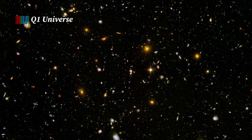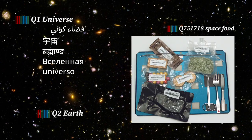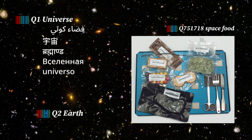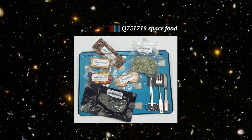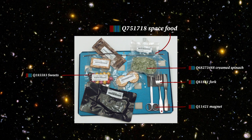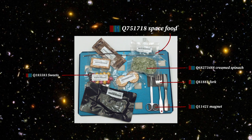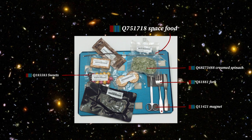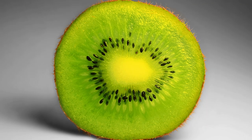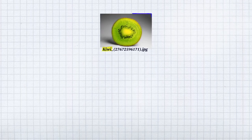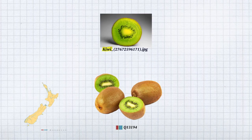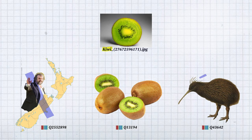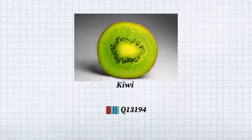Wikidata contains data items, or entities, about almost anything in the world. Each file on Wikimedia Commons can now be described with entities from Wikidata. Unique identifiers help to distinguish different things, even if they have the same name. For example, this image shows a kiwi and points to the Wikidata entry for the kiwi fruit — not a New Zealander and not a flightless bird. All Wikidata entities are multilingual, so it doesn't matter in which language you search.